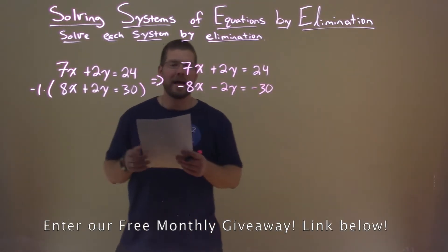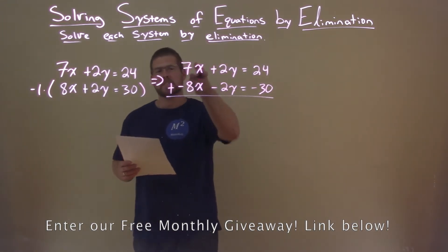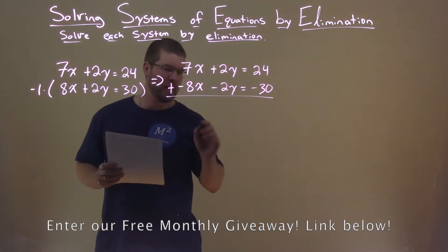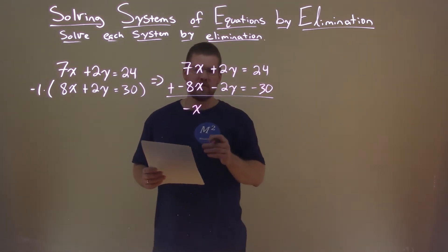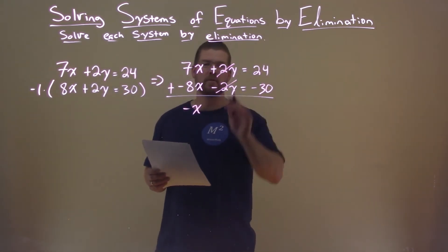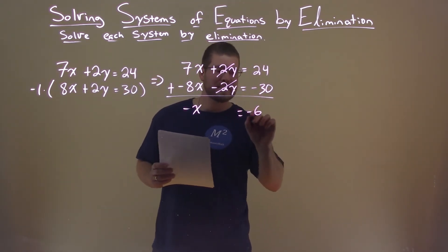Now we're going to add the two equations. 7x plus -8x is -x. 2y plus -2y is 0. The y's are eliminated. 24 minus 30 is -6.